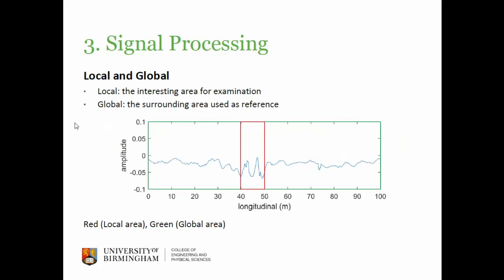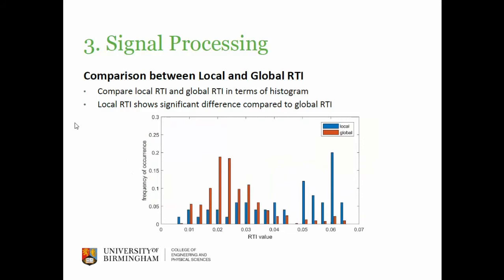Here I'll show what we mean by the local and global road. For example, for 100 meters of road we measure, the green box is what we call the global, and it is used as a reference. The red area in the middle is called the local — that is the area we are interested in and want to examine. We use the global as a reference because road textures vary greatly; for example, concrete and other road types differ, and ignoring this would introduce a lot of error.